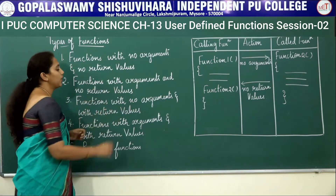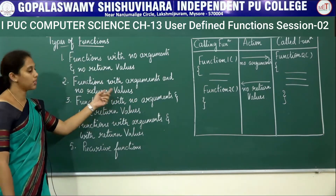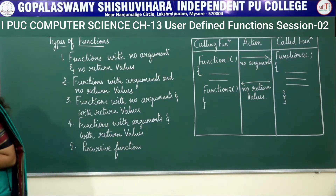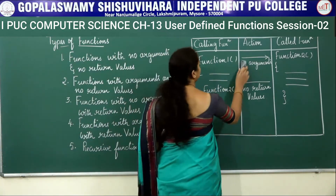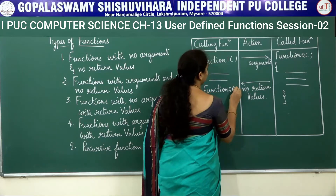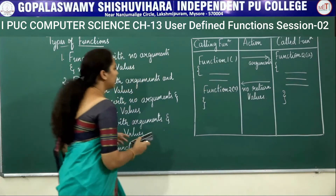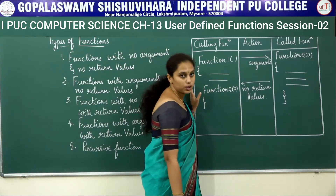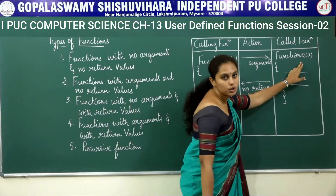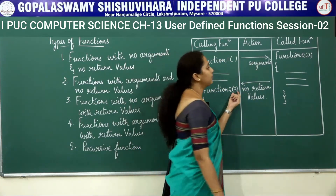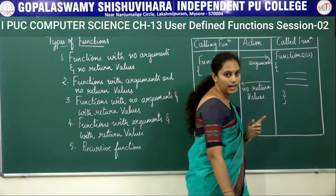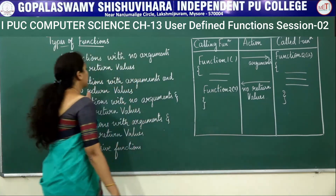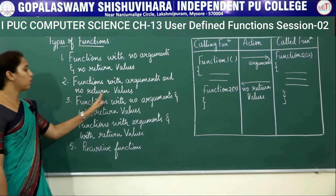The next type is functions with arguments and no return values. Functions with arguments means function 1 will pass some arguments to function 2. In this type, the first function calls the second function by passing some arguments. After calling, the second function performs its calculations but does not return any value to function 1. This is called functions with arguments and no return values.